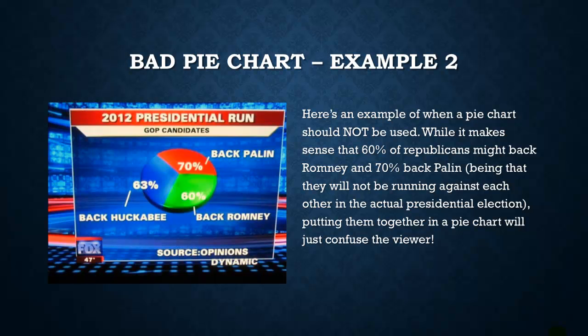Here's another bad pie chart example, taken from Fox News. They asked viewers who they would support for president — Palin, Romney, or Huckabee. Since most Fox viewers tend to vote Republican, it wouldn't be unusual for someone to say yes to all three candidates. As a result, the percentages don't add up to 100% — they add up to about 193%. This is very confusing to anyone looking at it. The data isn't necessarily wrong; it's that it should not have been presented as a pie chart.